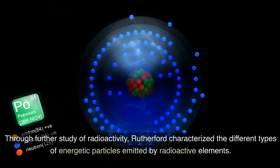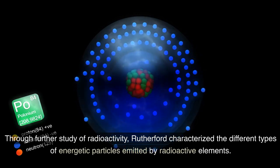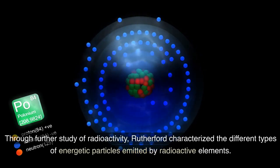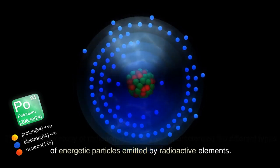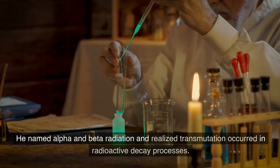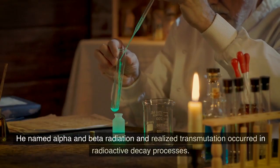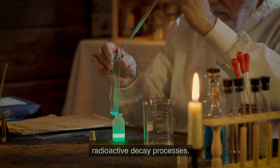Through further study of radioactivity, Rutherford characterized the different types of energetic particles emitted by radioactive elements. He named alpha and beta radiation and realized transmutation occurred in radioactive decay processes.